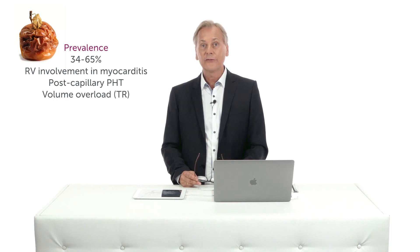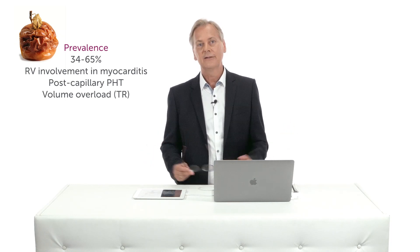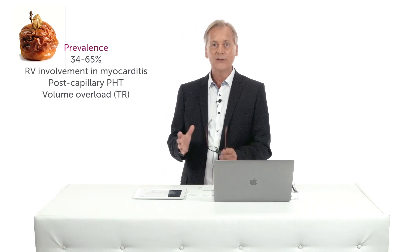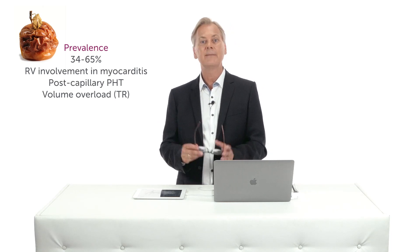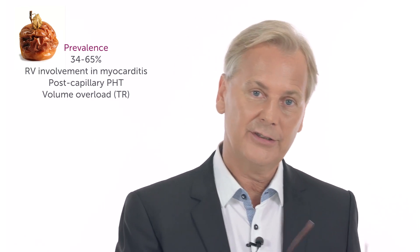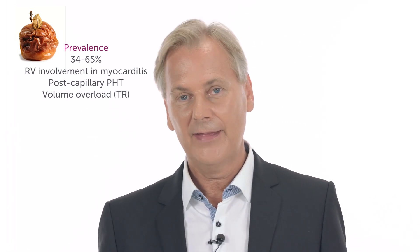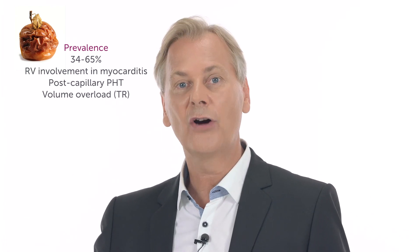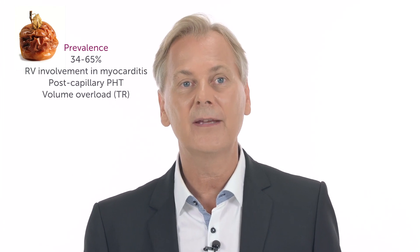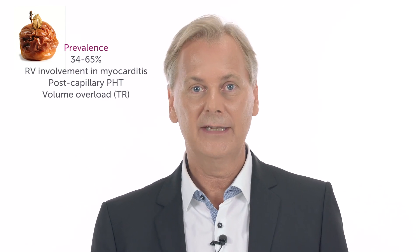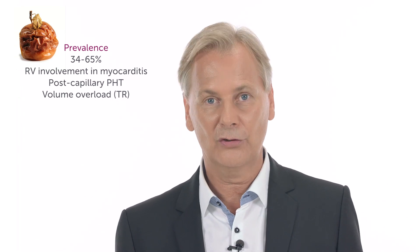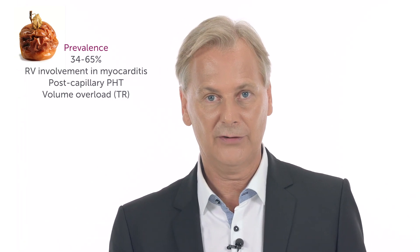Right ventricle dysfunction is quite frequent in cardiomyopathies — it's estimated to be between 34 and 65 percent. The reasons why you develop poor right ventricle function in cardiomyopathies are many-fold. The first cause is that the patient might have myocarditis that also involved the right ventricle. But it could also be that these patients develop right ventricle dysfunction later on because they have high pressure in the left atrium that translates to the pulmonary circulation — in other words, postcapillary pulmonary hypertension — which is a pressure overload burden to the right ventricle and leads to deterioration of right ventricle function over time.